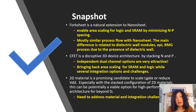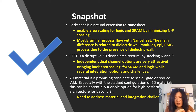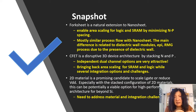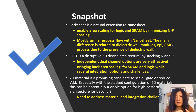Wrapping up device architecture: we talked about three different architectures — forksheet, CFET, and 2D materials. Forksheet is a natural extension to nanosheet with dielectric wall addition. CFET is a 4D NP-stacked device with potentially huge area scaling and significant integration challenges. 2D materials are a viable option beyond silicon, but fundamental material challenges must be addressed.